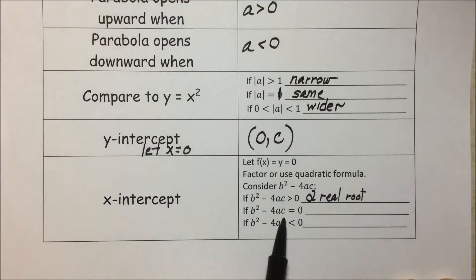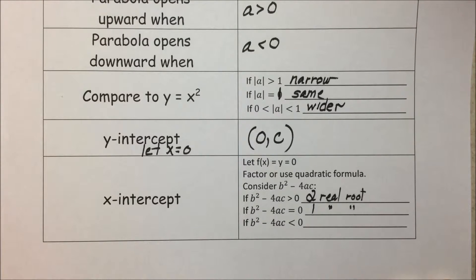If our discriminant is equal to 0, then we have one real root, and it means we only have one intercept.